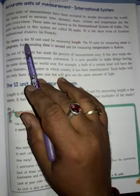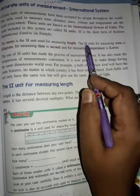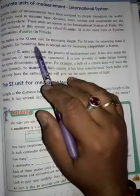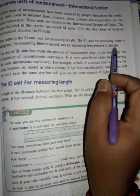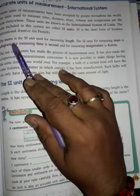The meter is the SI unit used for measuring length. The SI unit for measuring mass is the kilogram, for time is the second, and for temperature is Kelvin. The SI unit system is the same as the International System.